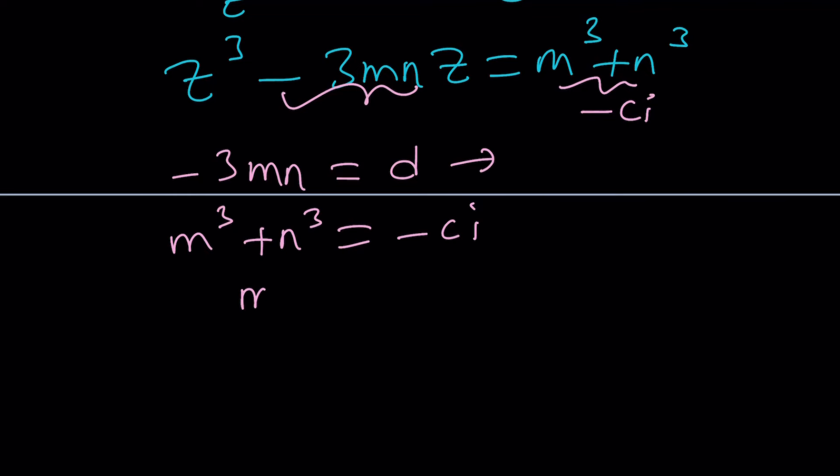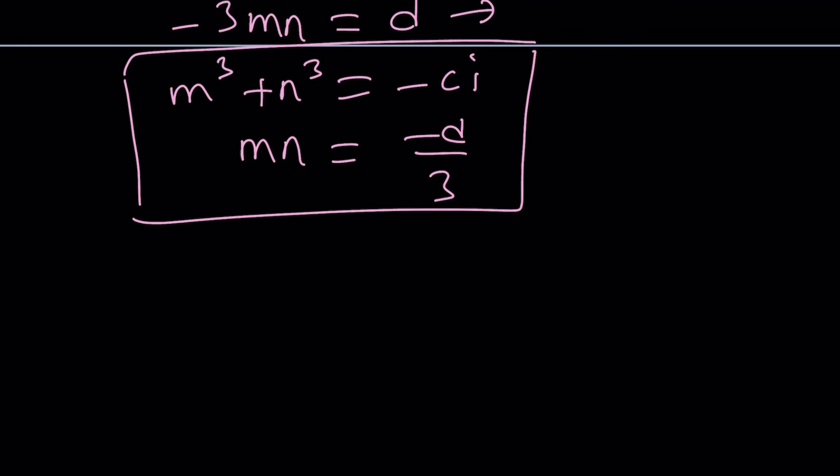You can write MN equals negative D over 3. And we get this. So now this looks like a cubic system, doesn't it? But it's actually quadratic. So one thing you can do is cube both sides in the second equation. That gives you negative D cubed over 27. By the way, there's a formula that you can memorize. So you're not going to have to go through this every time. But I just wanted to show you the methodology here.